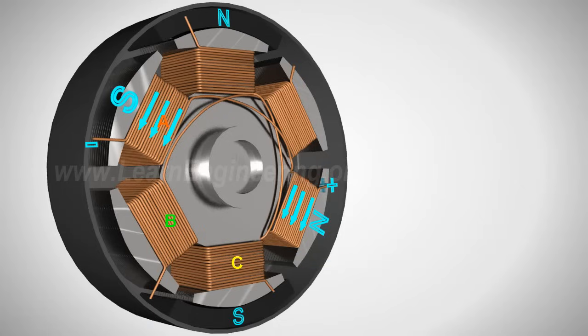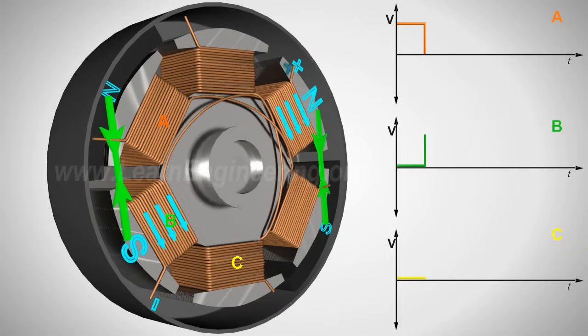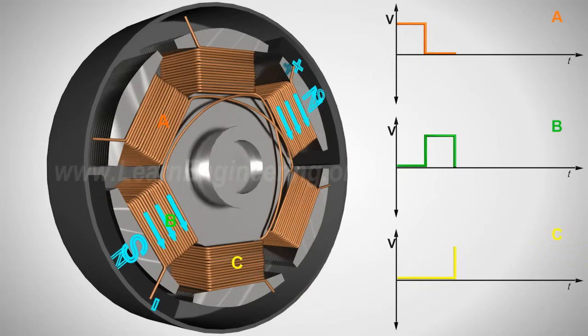In this condition, when coil A is energized, the opposite poles of the rotor and stator are attracted to each other. As the rotor nears coil A, coil B is energized. As the rotor nears coil B, coil C is energized.